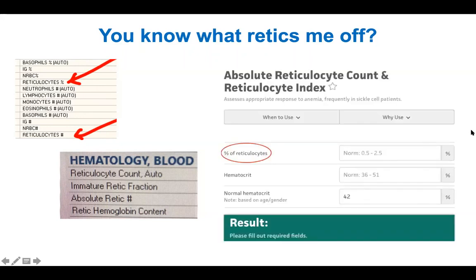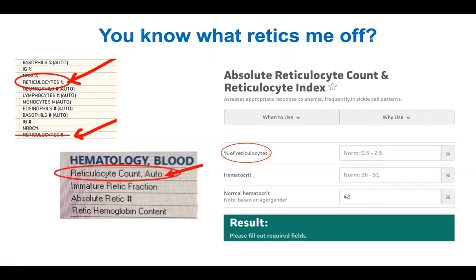If you pull up MD Calc, you have to put in three things to calculate all of this: percentage of reticulocytes, a hematocrit, and a normal hematocrit. If you're at the VA, you're going to put in the reticulocyte percentage — make sure it's a percentage, so if it's 20% put in 20, not 0.2. In EPIC, use the reticulocyte count auto. Do not use any of the other ones.